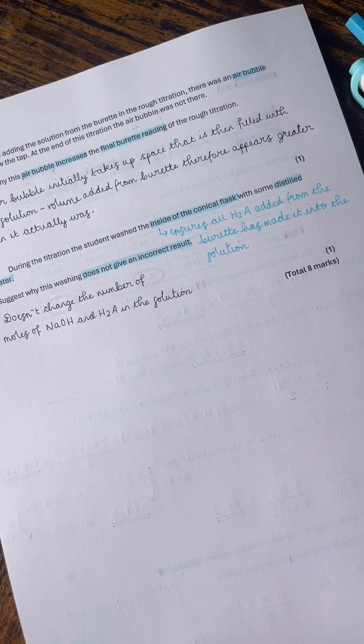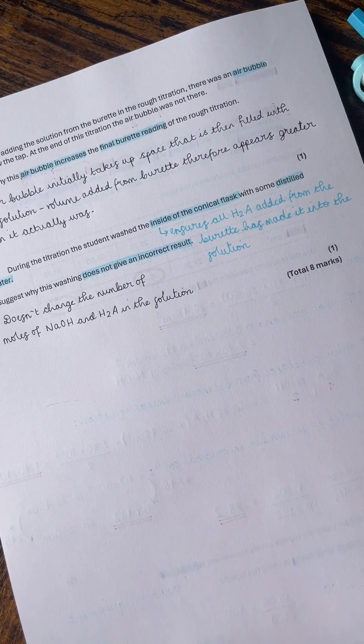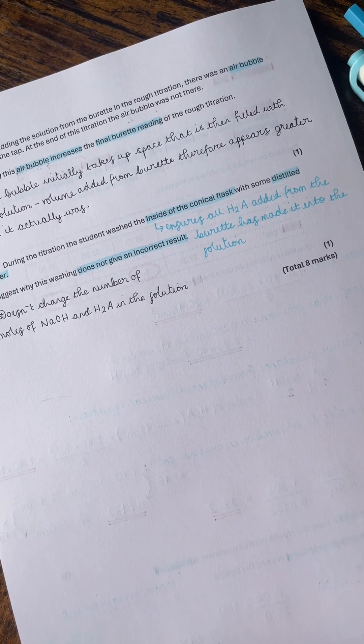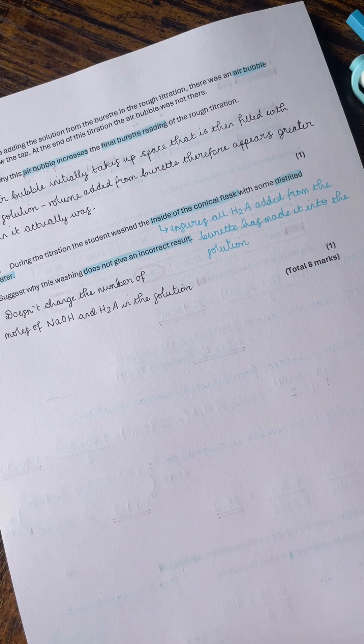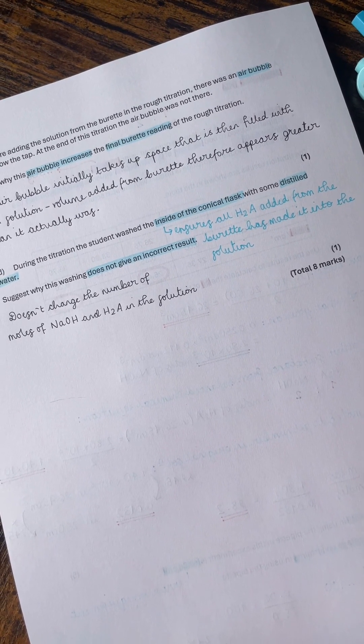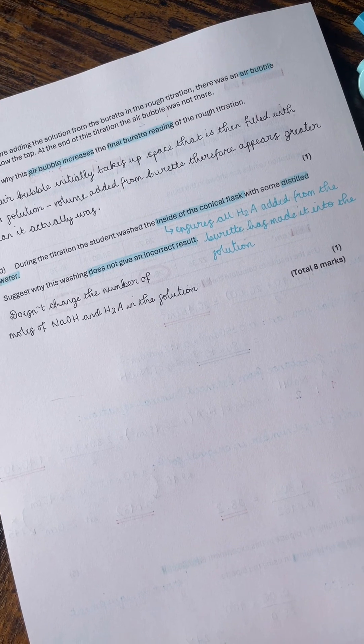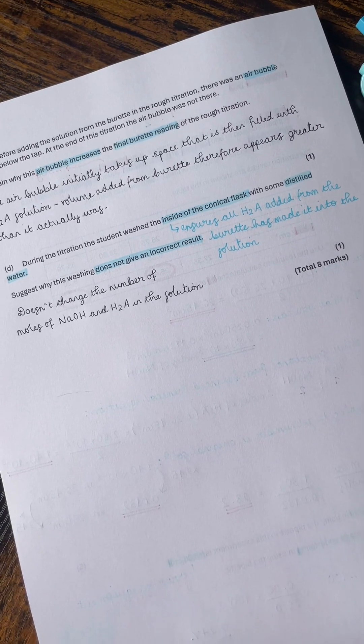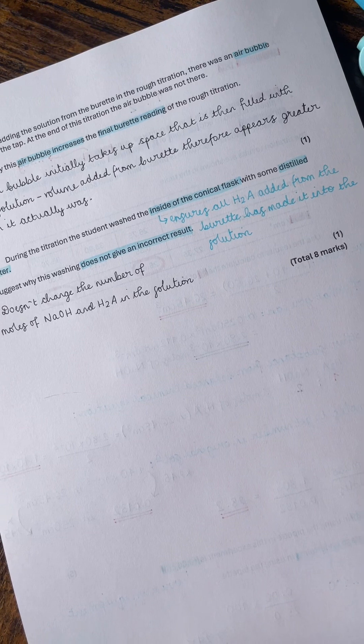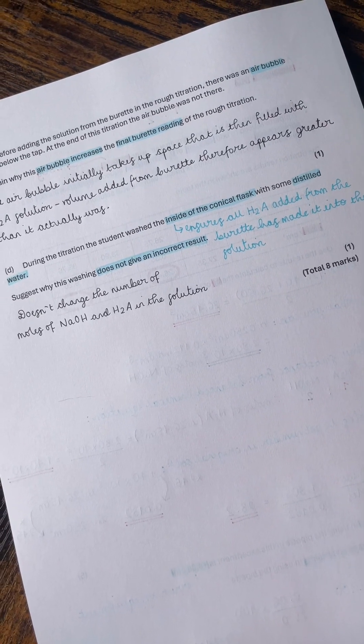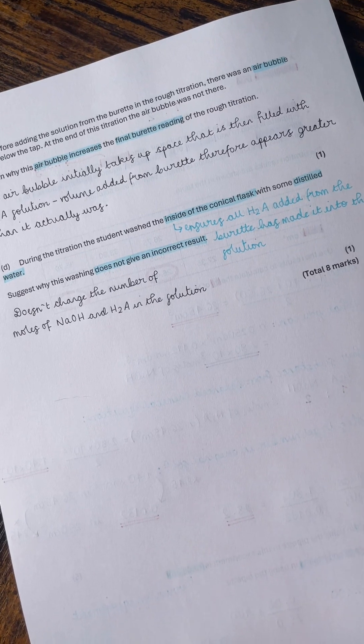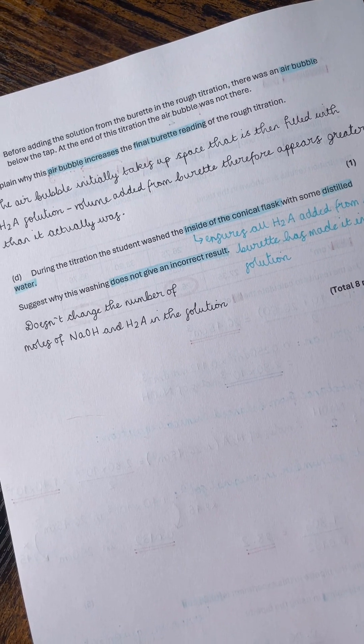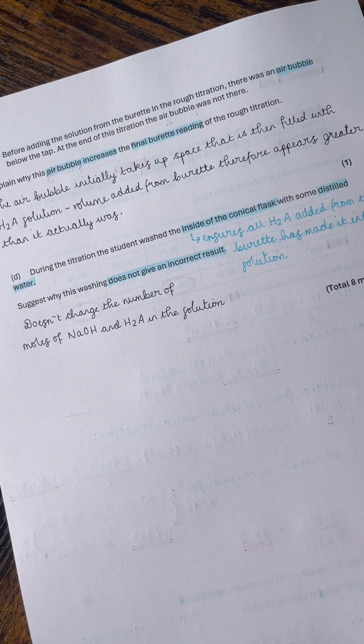Whereas obviously we want it to go down into the main body of the conical flask to actually react with the sodium hydroxide in there. So you'd use one of those washer bottles where you could rinse around the neck with distilled water, and that will ensure that all of the H2A or whatever it is that you're adding from the burette gets into the main body of the solution in the conical flask. That washing does not give us an incorrect result because adding distilled or deionized water will not change the number of moles of sodium hydroxide or the H2A in the solution. And so long as we've got the same number of moles, they are still going to neutralize one another at the exact same point in time.